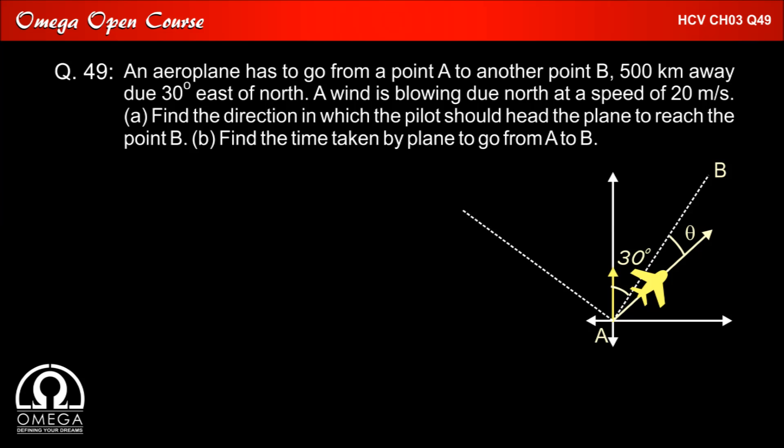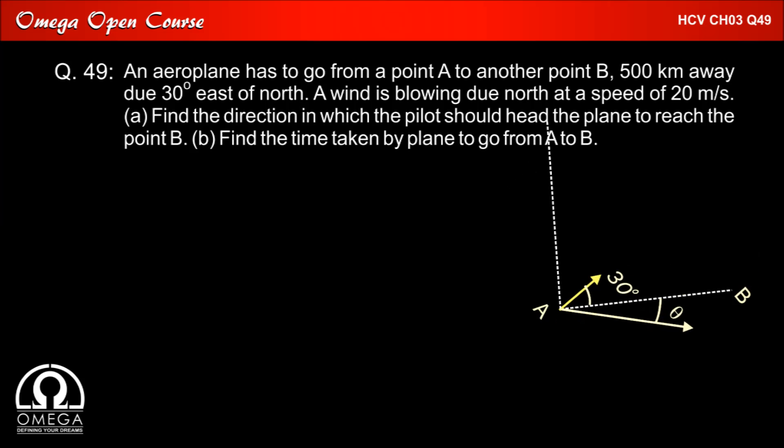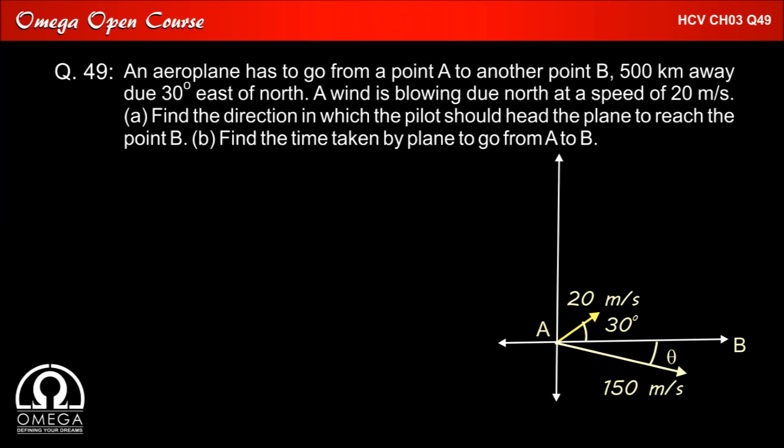Let's first set AB as our x-axis and the line perpendicular to AB as the y-axis. Now let's assume that the airplane is moving at angle theta with AB, and wind is at angle 30 degrees.